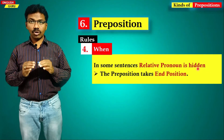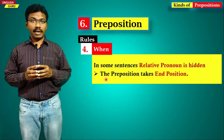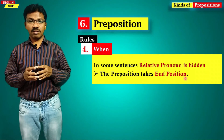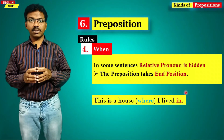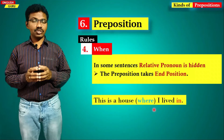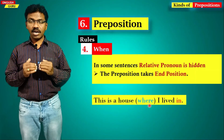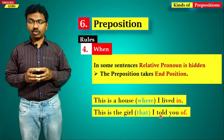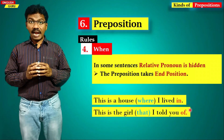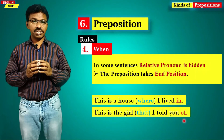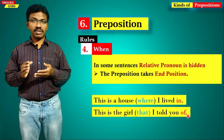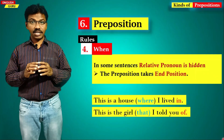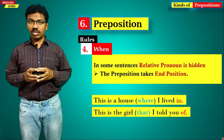The fourth rule is when in some sentences the relative pronoun is hidden — not seen but implied in meaning. In those sentences, the preposition is placed at the end. For example, 'this is a house I lived in' — 'where' is implied but not visible, so 'in' is placed at the end. Similarly, 'this is the girl I told you of' — 'that' is understood in context. Otherwise, a preposition is always placed before a noun or pronoun and connects it with the other words in a sentence.